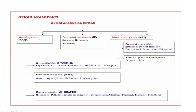First let us discuss opioid agonists. These are further subdivided into three groups. The mnemonic is OSS — bold letters O, S, S. O — opium alkaloids. S — semisynthetic agents. And one more — S — synthetic agents.